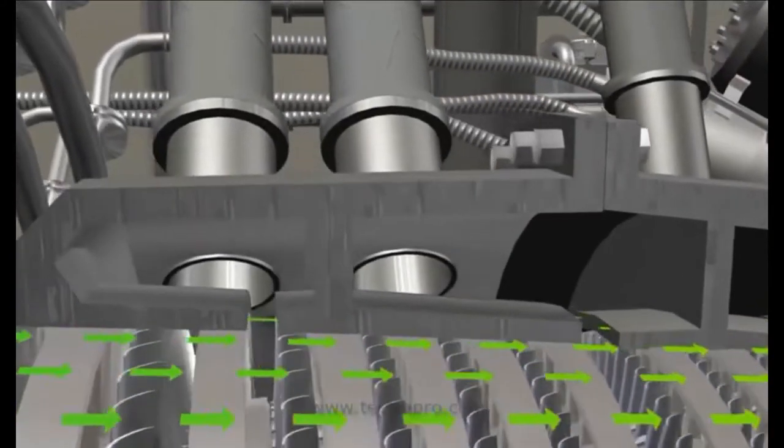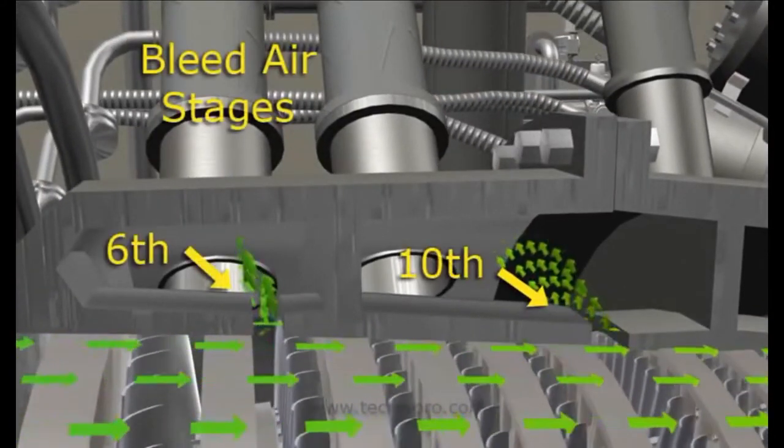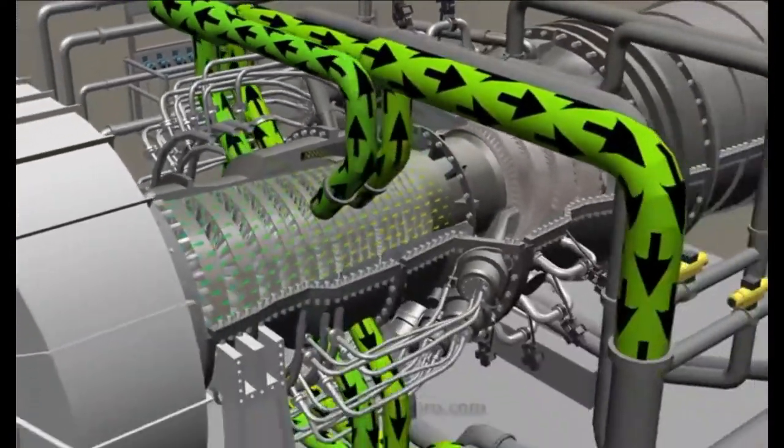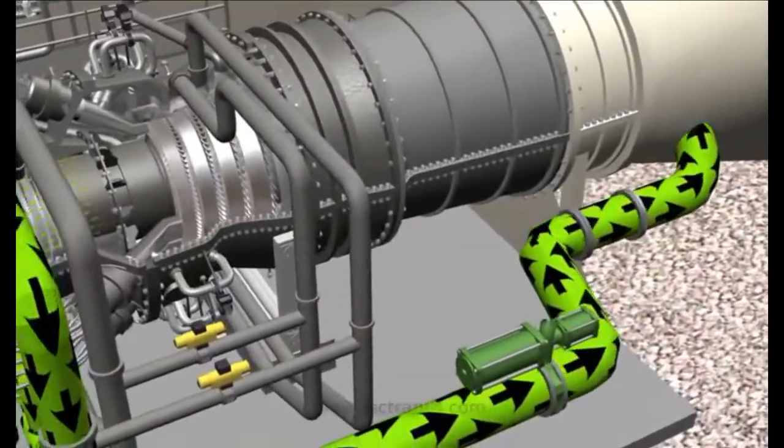During startup and shutdown, air is extracted from the sixth and tenth stages of the compressor and is bled to the turbine exhaust. This will help prevent compressor surge and blade stalling.